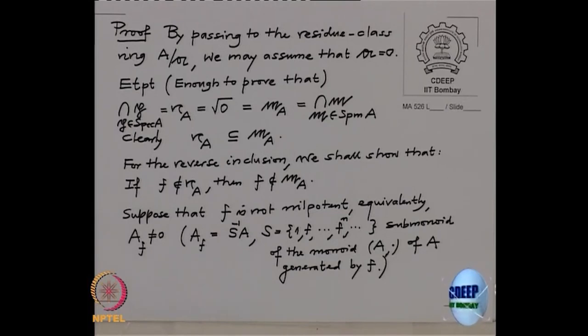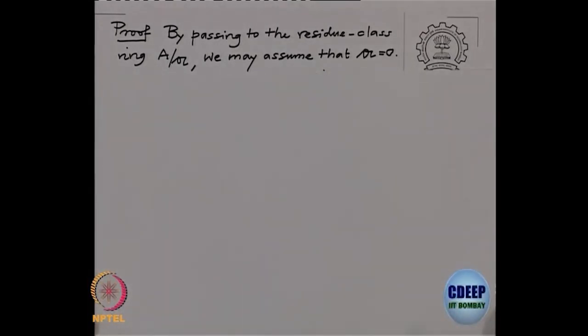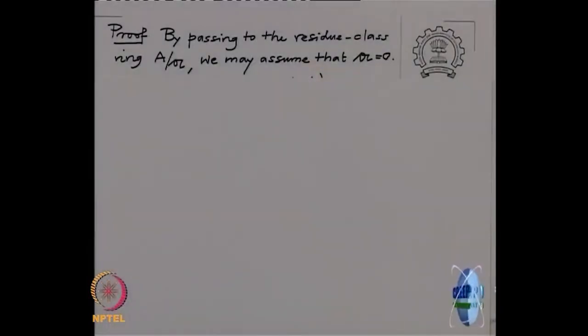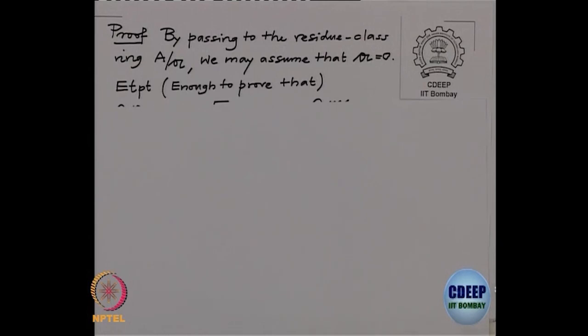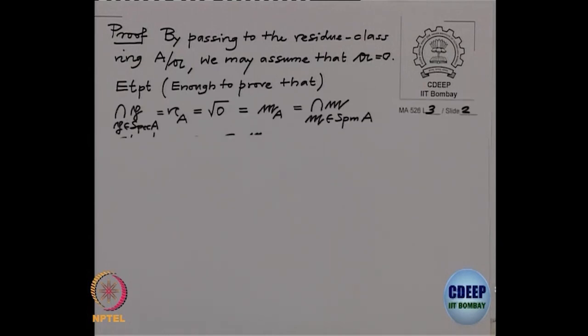Proof: by passing to the residue class ring A by gothic-a, we may assume that the ideal is 0. So replacing A by A mod gothic-a, gothic-a becomes 0, and then we want to prove that the nil radical of this ring equals the Jacobson radical.